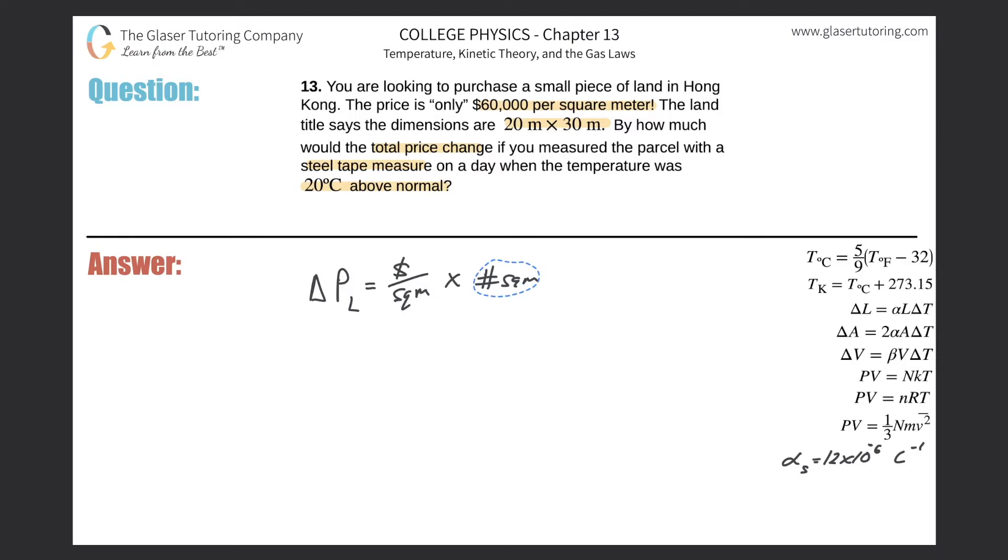Now this is an area, right? Square meters is an area. So in other words, I can rework the formula this way: the change in price of the land will equal the price per square meter multiplied by the change in area.